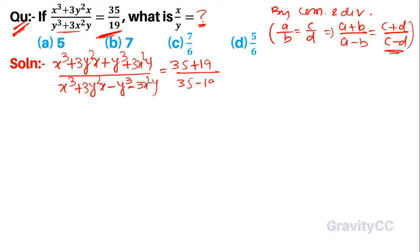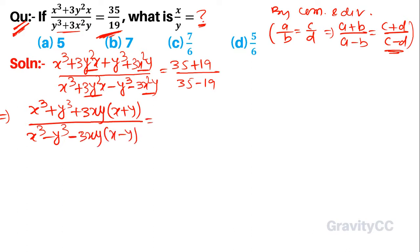This gives us x³ + y³ and 3xy comes out, so we get x plus y in one part, and x³ minus y³ with 3xy times x minus y. This equals 35 plus 19.